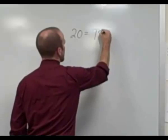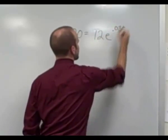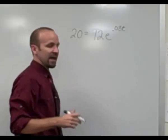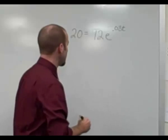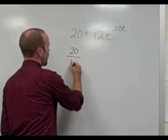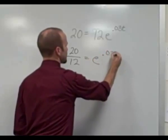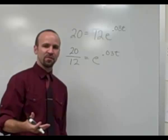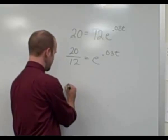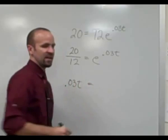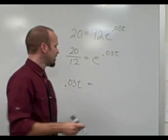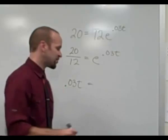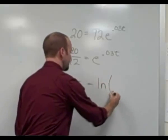We have 20 equals 12 e raised to the 3 percent times t power. To solve this equation, the first thing we want to do is isolate the exponential portion by dividing both sides by 12. That gives 20 twelfths equals e to the 3 percent times t power. Once I've isolated the exponential portion, I can rewrite this in logarithmic form — starting with the exponent, 3 percent times t. That equals the natural logarithm of 20 twelfths, since the base is e.